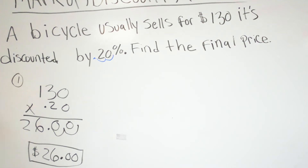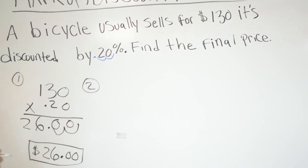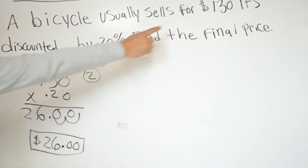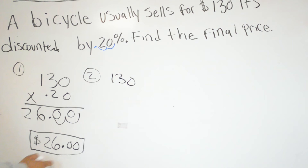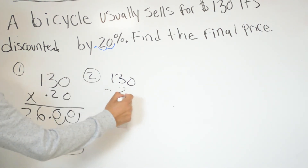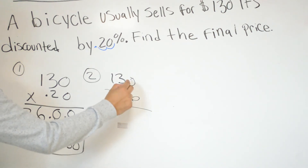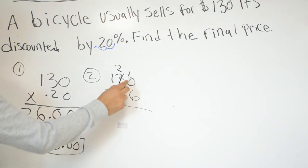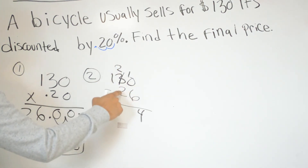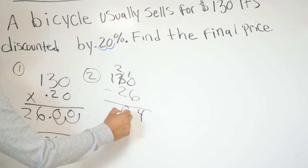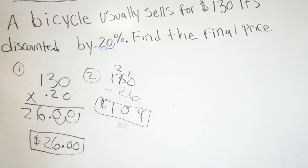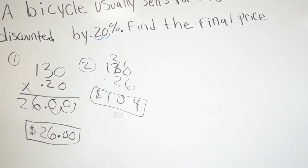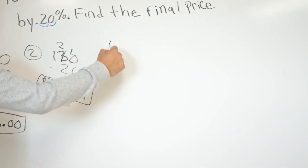We've found that the discount is $26 — that's part one of the problem. Part two is finding the final price. We take the original price of $130 and subtract the discount of $26. We borrow: 10 minus 6 is 4, 2 minus 2 is 0, bring down the 1 — so the final price you'll pay for the bicycle is $104.